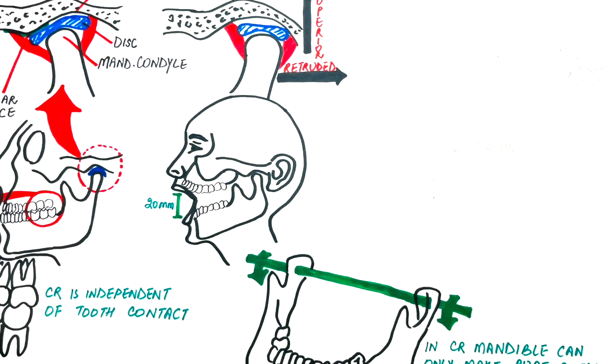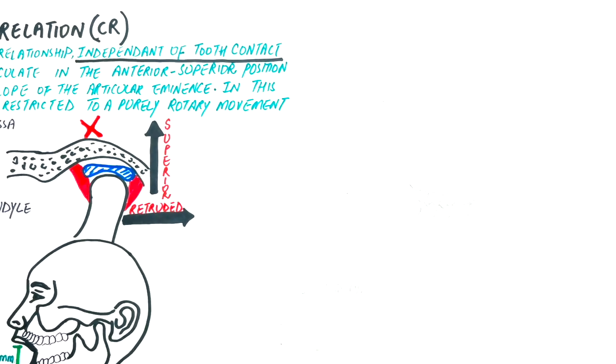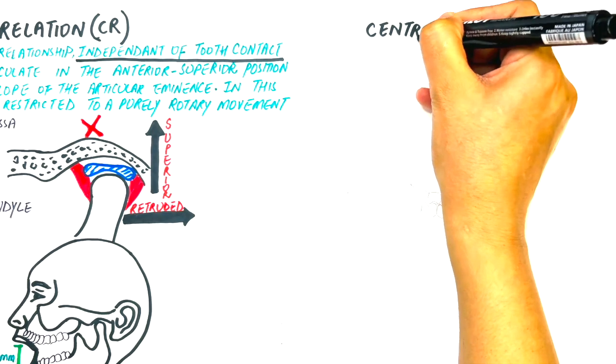An evaluation of the centric relation position is key to determining if any aspect of this complex system is not working properly. When not in harmony, it can result in painful muscles as well as jaw and bite misalignment.